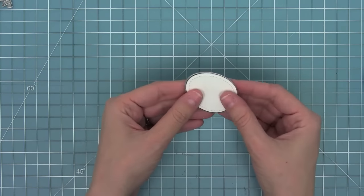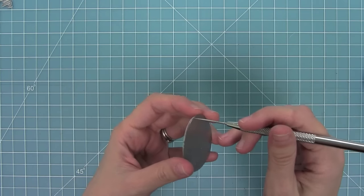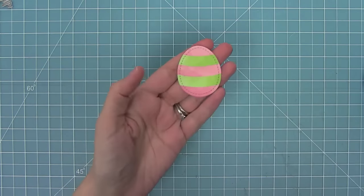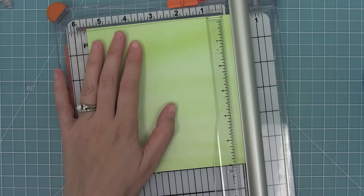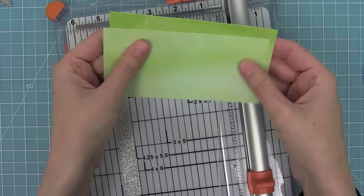I wanted that striped egg to have the stitching detail so I'm lining it up in that base egg piece, running it through the die cut machine and now there's actually a stitching detail on that striped egg.